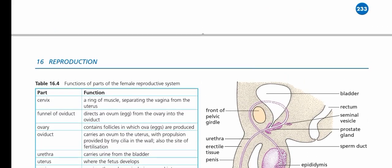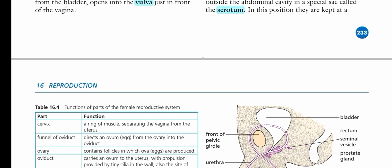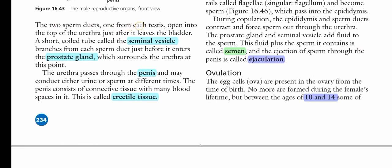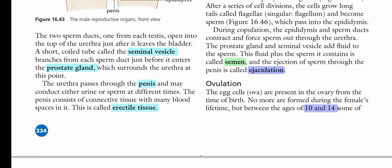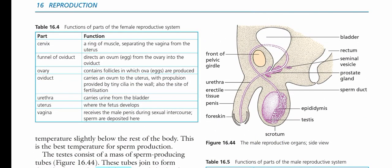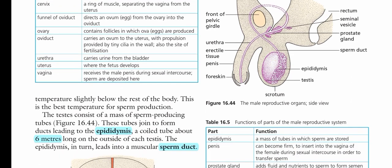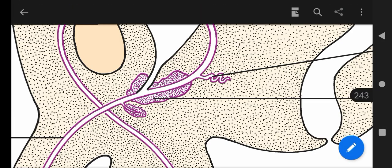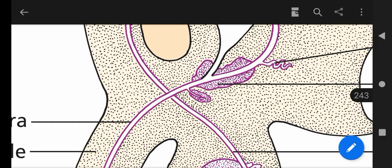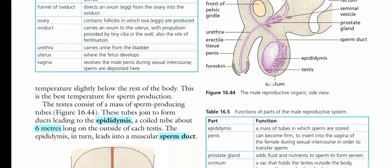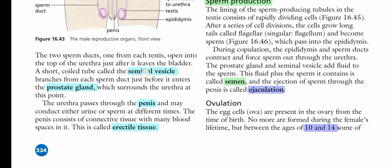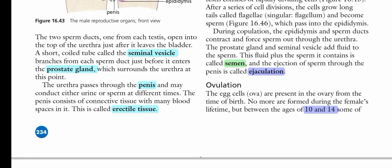The epididymis leads into the muscular sperm duct, which passes through to the urethra. The two sperm ducts — one from each testis — open into the top of the urethra just after it leaves the bladder, as visible in the side view. There are two types of glands: the seminal vesicle and the prostate gland. Another important gland not shown here is the bulbourethral gland, which also provides nutrition and liquid medium to the sperm. A short coiled tube called the seminal vesicle branches from each sperm duct just before it enters the prostate gland.